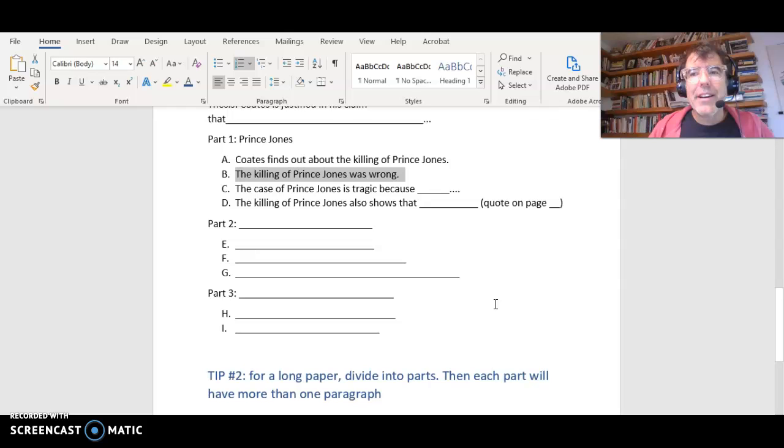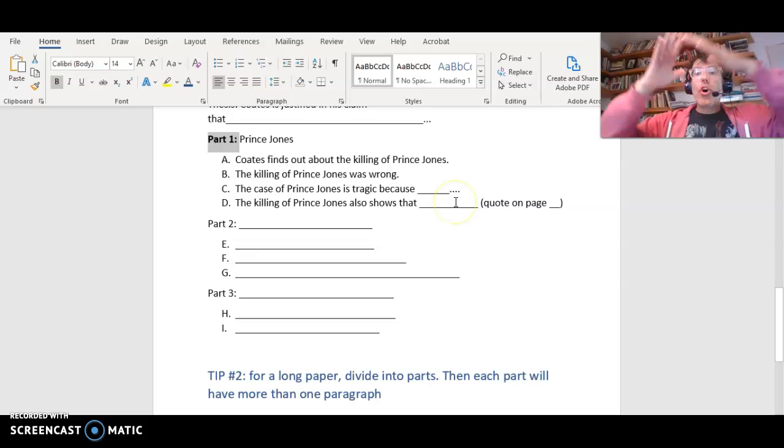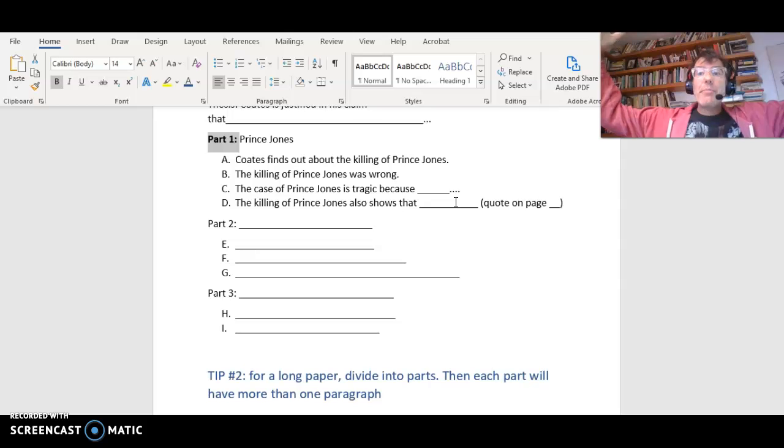Notice for my sample, I decided that Prince Jones was going to be a part of the essay, not a paragraph. Because remember, your essay is long - it's going to be like eight pages. So part two will be about something else, and then each one of these is a paragraph. By dividing into parts, this is like the overall structure of your paper. You're planning a long paper, but then each part will have more than one paragraph in it. Once you start doing this, then you're really making an outline for a long paper.